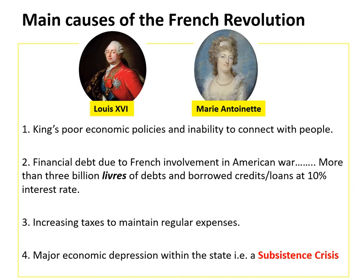In this social structure, how did the French Revolution start and what were the main causes? Firstly, in 1774, Louis XVI — who was only 20 years old, from the Bourbon family — became the king of France and married an Austrian princess named Marie Antoinette. However, people were unhappy with his poor economic policies and his inability to connect with his people. Secondly, France was involved in war for a long time, especially the American Revolution, by helping the American colonies gain independence from Great Britain, which drained the financial resources of France.